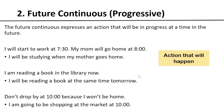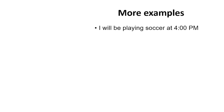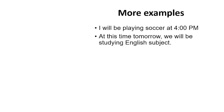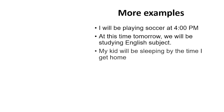We use future continuous when we are sure the action will happen at a specific time in the future. Remember, time markers are essential in future continuous. More examples: 'I will be playing soccer at 4 pm.' 'At this time tomorrow, we will be studying English.' 'My kid will be sleeping by the time I get home.' You can see the time markers: 'at 4 pm,' 'at this time tomorrow,' 'by the time I get home.'